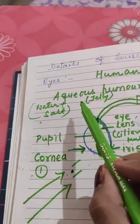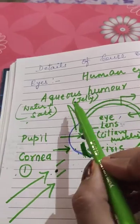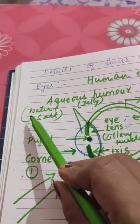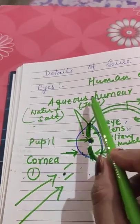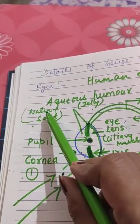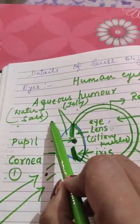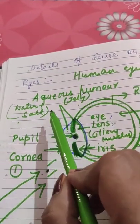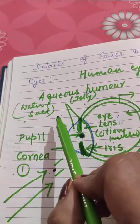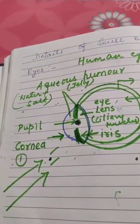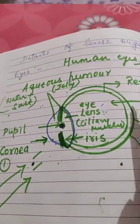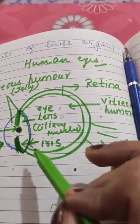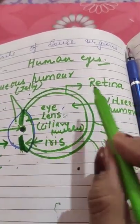In the front part of the eye there is a jelly-like substance called aqueous humor. Aqueous humor is made up of water and salt — a combination of water and salt.